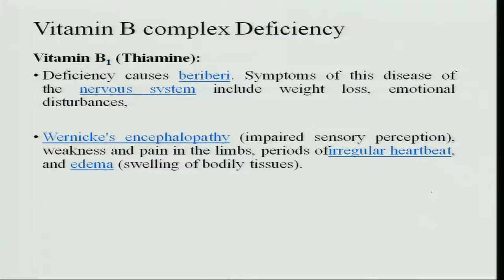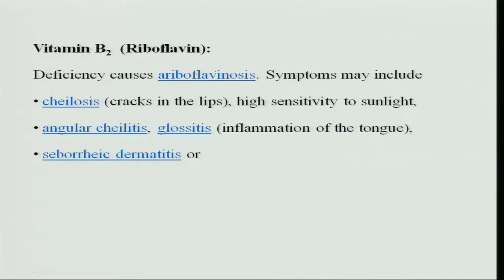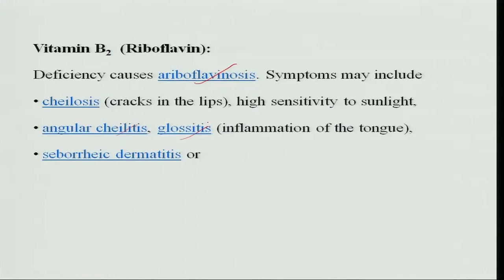Deficiency of B complex vitamins: Vitamin B1 (thiamine) deficiency causes beriberi, affecting the heart and nervous system with irregular heartbeat and edema. Riboflavin deficiency causes ariboflavinosis, presenting as cheilosis, angular cheilitis, and glossitis — the tongue gets cracked and bleeds, and the angles of the mouth crack, known as angular stomatitis. Niacin deficiency, caused by deficiency of tryptophan, is called pellagra — a disease of the 3Ds: dermatitis, dementia, and diarrhea — which can also cause insomnia, weakness, and mental confusion, and if neglected may lead to death.